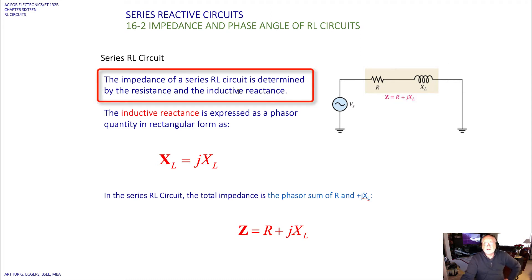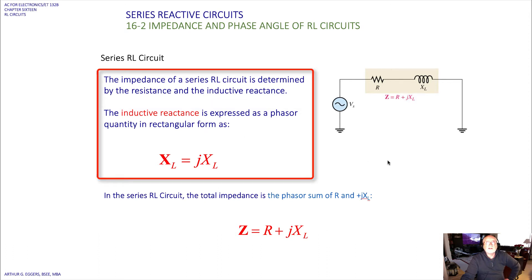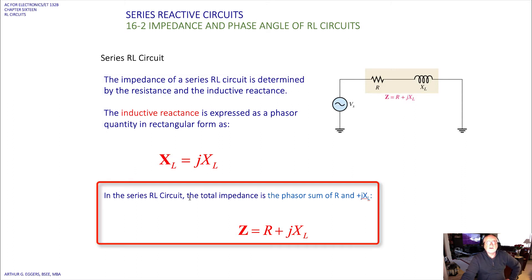The impedance of a series RL circuit is determined by the resistance and the inductive reactance. The inductive reactance is expressed as a phasor, just like we saw previously with capacitors. A phasor quantity in rectangular form is XL equal to JXL — the bold notation tells us it's a phasor relationship. The total impedance is the phasor sum R plus JXL.